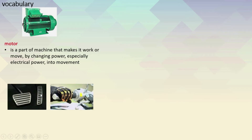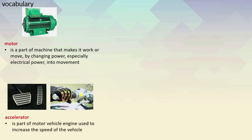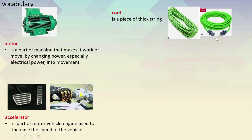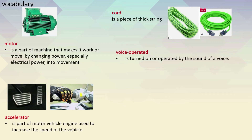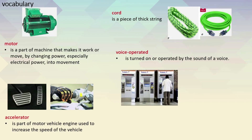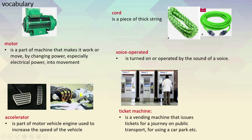What are these? This is a car accelerator, and this is a motorbike accelerator. An accelerator is a part of a motor vehicle engine used to increase the speed of the vehicle. Our next word is cord. A cord is a piece of thick string like these ones. And then we have voice-operated. Any device that is voice-operated is turned on or operated by the sound of a voice. And our last word is this.